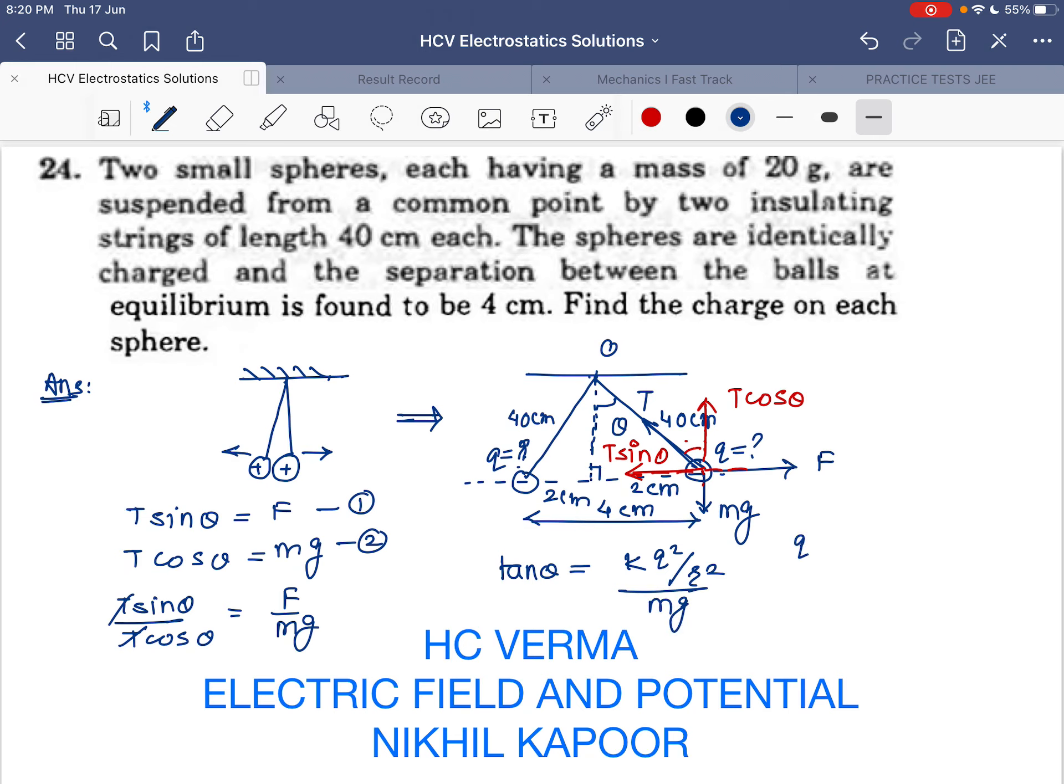We need to find q, so q comes out to be the square root of tan theta times mg times r squared divided by k. The complete thing is under the root.